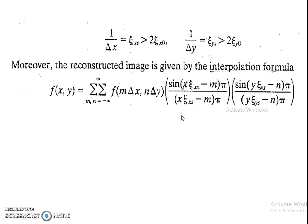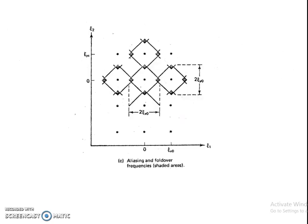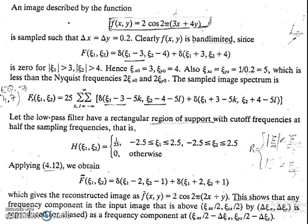To summarize aliasing and the reconstruction filter: aliasing can be avoided by taking a 2D low-pass filter whose cutoff frequencies are equal to half of the sampling frequencies ζxs and ζys respectively. Now let us look at a problem. Consider an image F of x, y equals 2·cos(2π(3x + 4y)). The question is: what happens if we undersample this signal? What is the reconstructed signal if the image is sampled at Δx = Δy = 0.2?